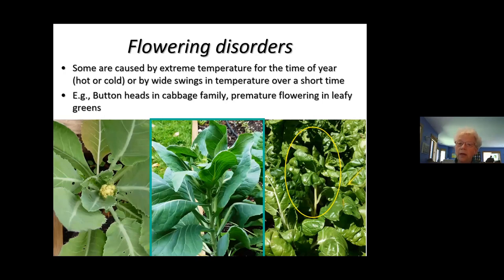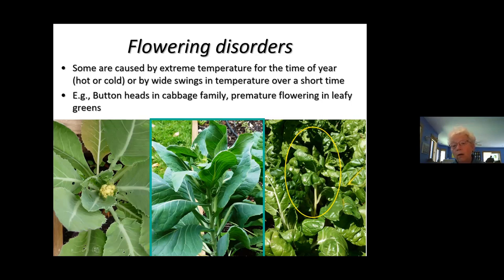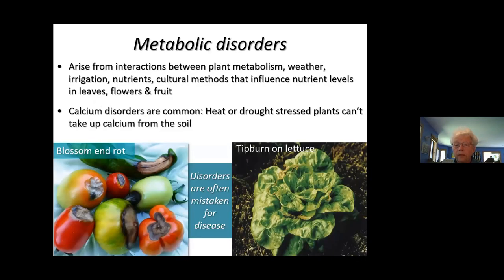Flowering disorders are caused by extreme temperature for the time of year — usually too hot. Here's a button head on cauliflower: this was a summer variety being grown for a winter crop, and in the fall you get a button head — that's not the right variety. Annual cauliflower is not meant to be a winter crop; we want the biennial, two-year cauliflower. Growing the wrong things at the wrong time, or growing the right things but having extreme weather, causes problems — here's a whole row of chard going to seed in a heat wave when it should have waited till next year.